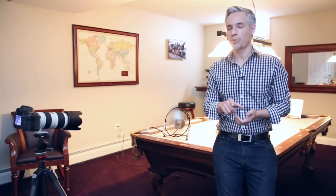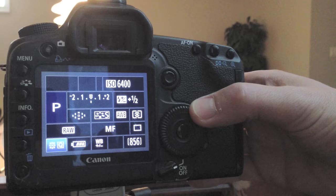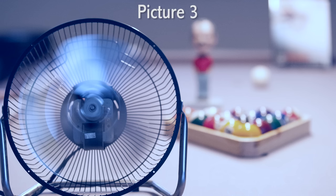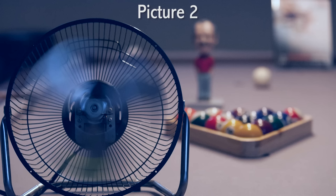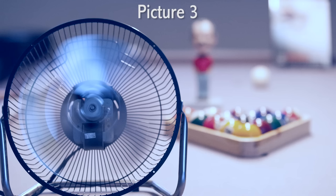A lot of people think they can change any one of these settings and it will adjust the brightness of the picture in automatic mode — it's not true. You can adjust the ISO, shutter speed, aperture, or the light in the room, and the camera is always going to adapt to it. If you want to change your brightness, use exposure compensation. On most cameras that's controlled with a dial on the back. I'm going to add a stop of exposure compensation so we can see the difference — the picture did get brighter.